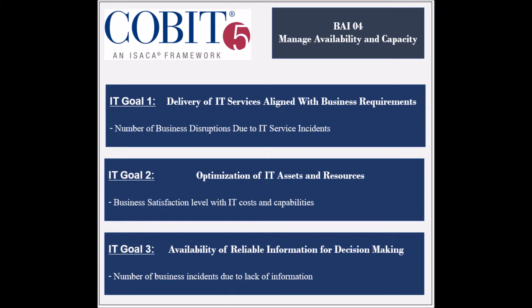The second supported goal is to ensure the optimization of IT assets and resources. Its achievement is measured by the frequency of cost optimization assessments, and by the business satisfaction level with IT costs and capabilities. The third goal supported is to ensure that reliable information is available for decision-making. Its achievement is measured by the business satisfaction level with information quality, and by the number of business incidents due to lack of information.